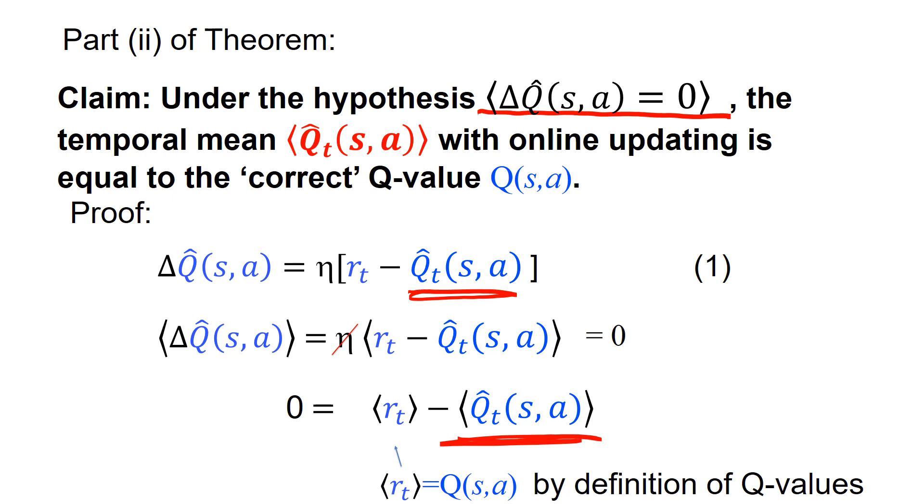And so here, the temporal mean is the correct value. Why? Because this update rule one is symmetric. If my Q value is a bit too high, I go down. If it's a bit too low by the same amount, I go up. And the change is always proportional to eta. So if all these things will average out and the only possible value with zero solution is the one defined here, which is the correct Q value.